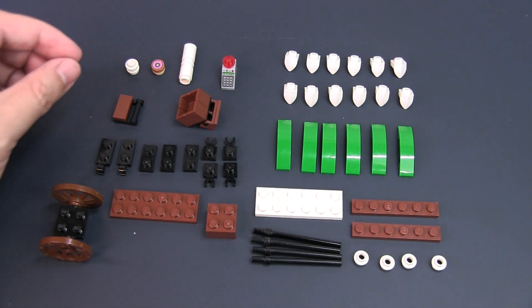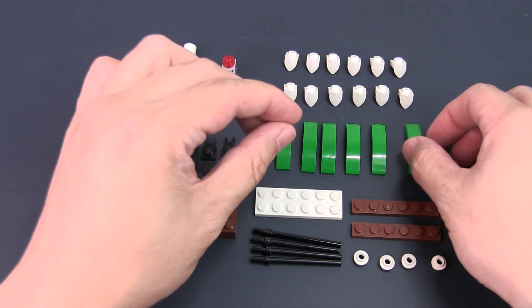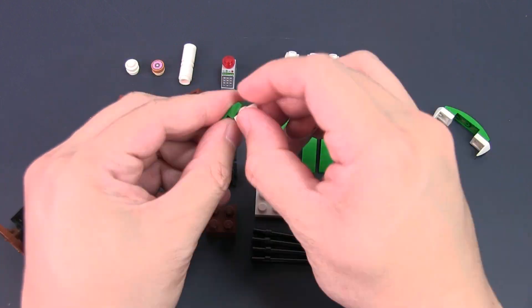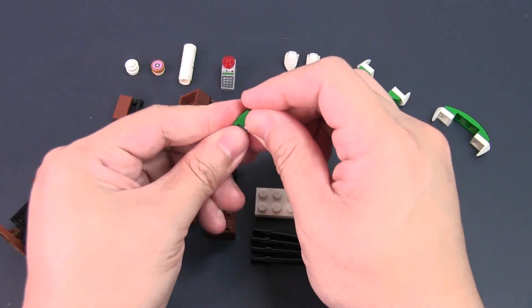To build the coffee cart, start with the roof by attaching the modified plate with the tooth part to each end of the 1x4 sloped tiles. Do so for all 6 sloped tiles.